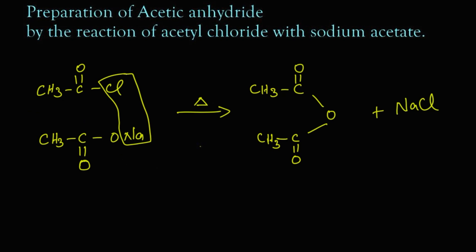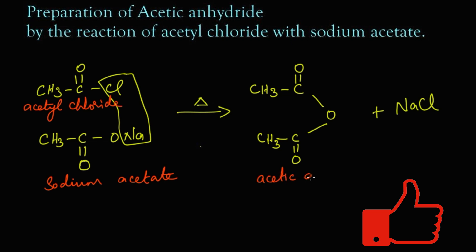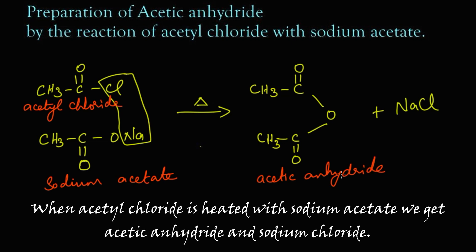This is acetyl chloride, this is sodium acetate. On heating, it gives acetic anhydride. Let's summarize the reaction now. When acetyl chloride reacts with sodium acetate on heating, it gives acetic anhydride with the elimination of a sodium chloride molecule.